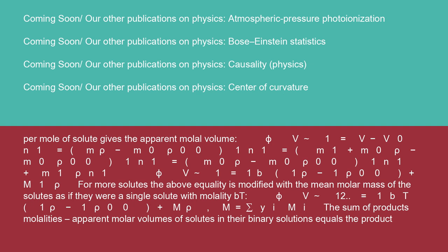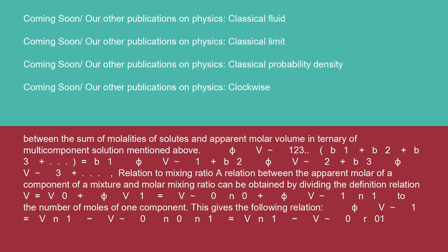Apparent molar volumes of solutes in their binary solutions equals the product between the sum of molalities of solutes and apparent molar volume in ternary or multi-component solution: φV₁₂₃(B₁ + B₂ + B₃ + ...) = B₁·φV₁ + B₂·φV₂ + B₃·φV₃ + ...